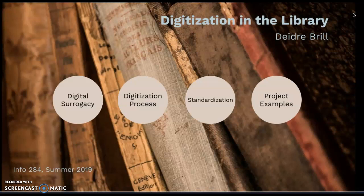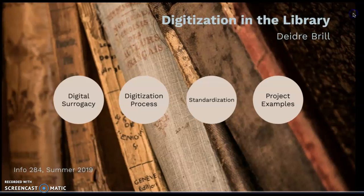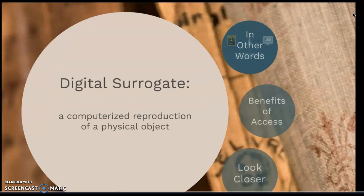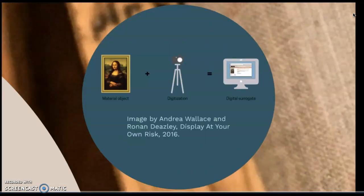We're here to learn about how digital surrogacy could benefit our library. First, what is digital surrogacy? A surrogate is a term for a computerized reproduction of a physical object — in this case, digital photographs of items within our library. While manuscripts and other written works are among the most popular, paintings, tapestries, sculptures, and ephemera can be captured and shared online as well.